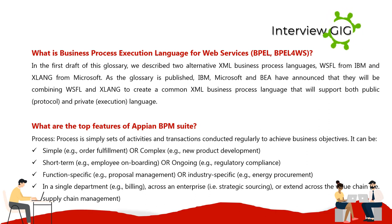What are the top features of the Appian BPM Suite? Process: processes are sets of activities and transactions conducted regularly to achieve business objectives. They can be simple (e.g., order fulfillment) or complex (e.g., new product development), short-term (e.g., employee onboarding) or ongoing (e.g., regulatory compliance), function-specific (e.g., proposal management) or industry-specific (e.g., energy procurement), within a single department (e.g., billing) or across an enterprise (e.g., strategic sourcing or supply chain management).